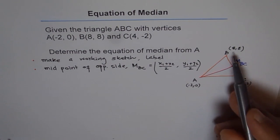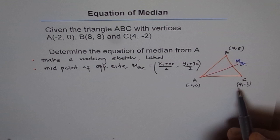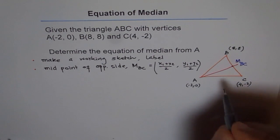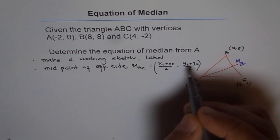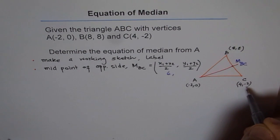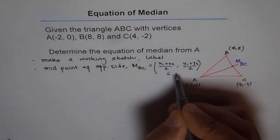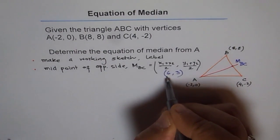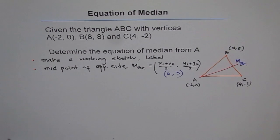So X1 values are 8 and 4. If you add 8 and 4, you get 12. And 12 divided by 2 is 6. So you get 6 here. So midpoint is 6 here. And the Y values are 8 plus (-2), which is 6. And divide by 2 is 3. So you get 3 here. So our midpoint is (6, 3), correct?